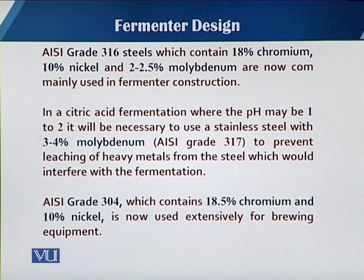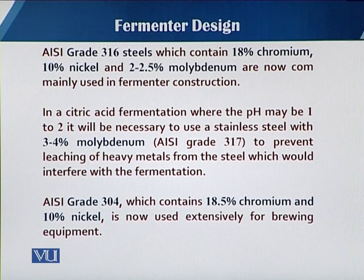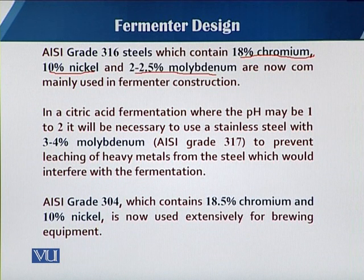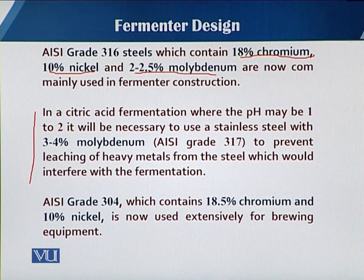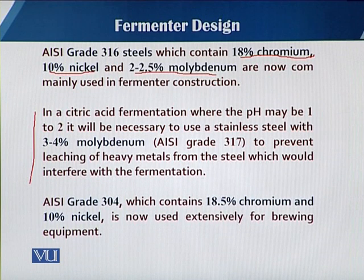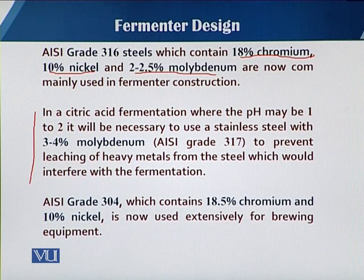As concerned the American Institute of Stainless Steel, grade 316 contains 18 percent chromium, 10 percent nickel, and 2 to 2.5 percent molybdenum. However, when there is acidic fermentation — especially citric acid fermentation where the pH can drop to 1 to 2 — those highly acidic conditions mean 316 grade stainless steel cannot withstand the required properties.